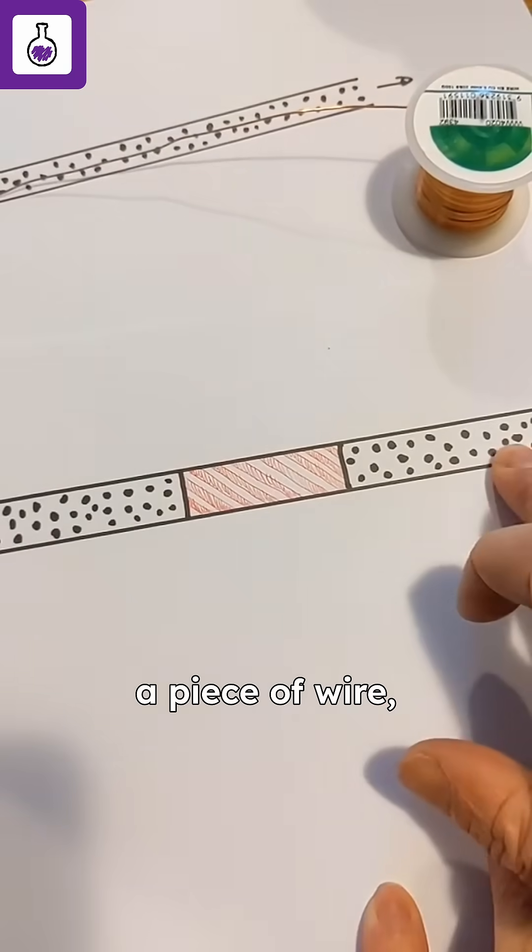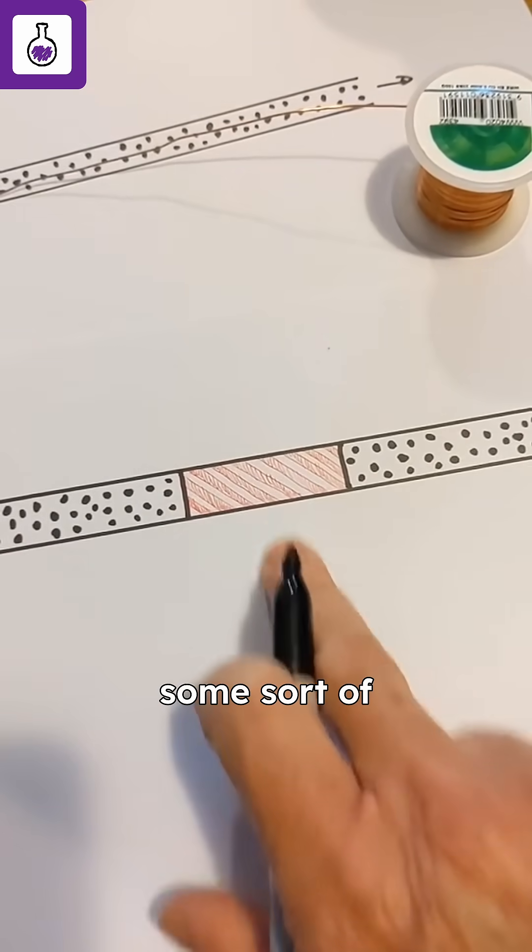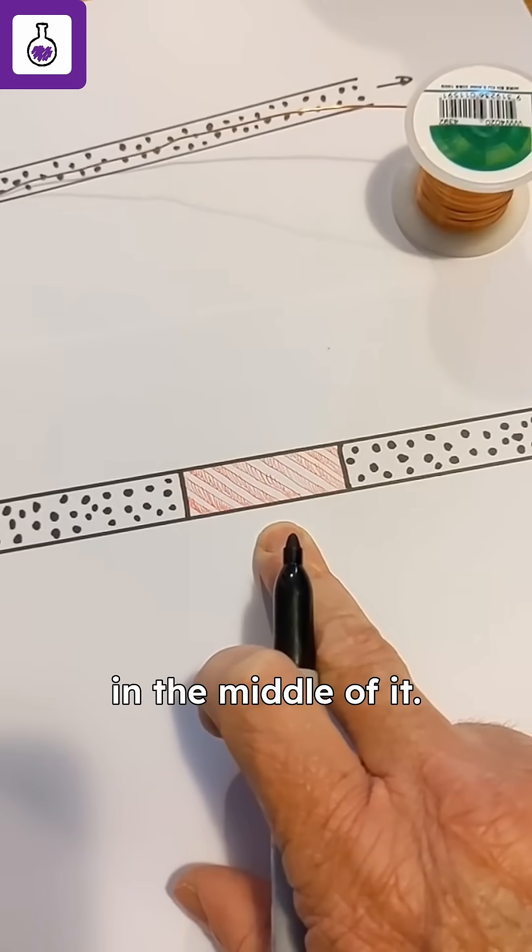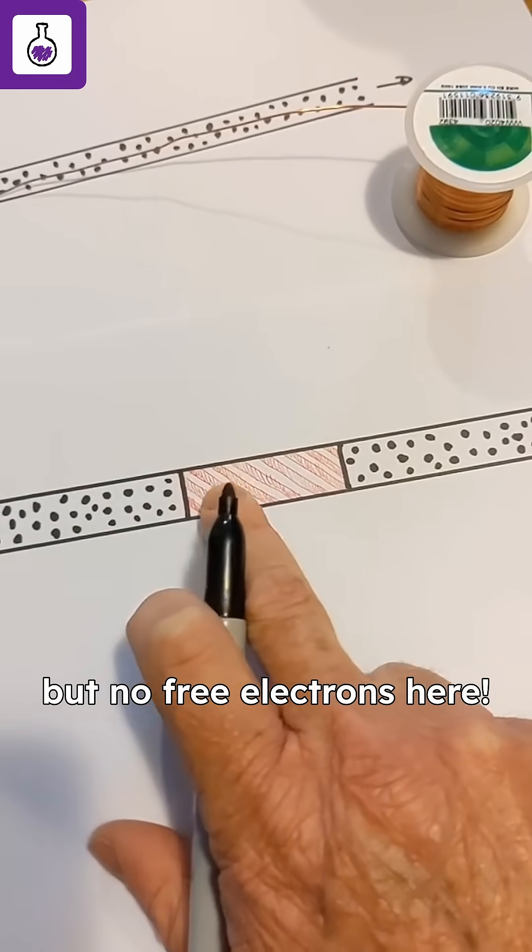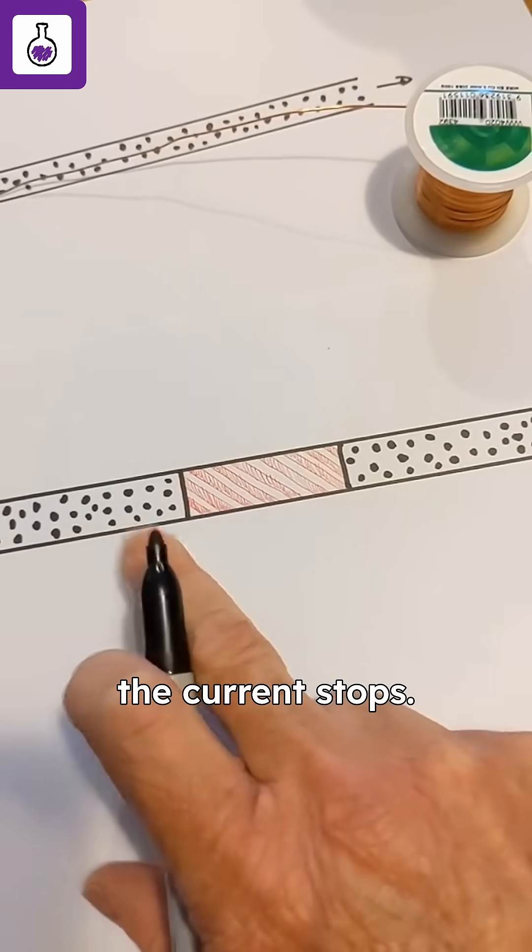Now picture this. Imagine we have a piece of wire, but we have some sort of insulating material in the middle of it, and so we end up trying to push electrons, but no free electrons here, and so suddenly the current stops.